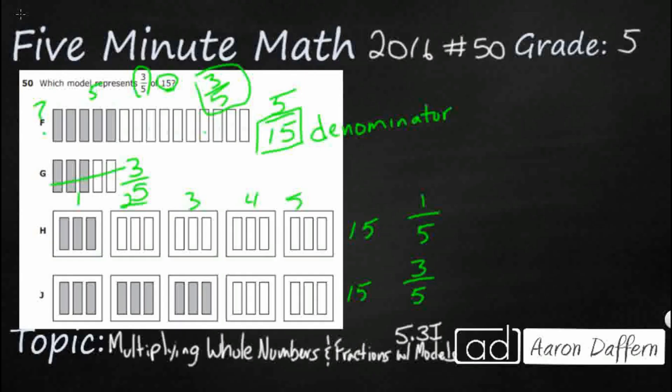So J has got 15 total, and it's got them in five groups. And our numerator here, remember our numerator is our top number, shows that out of those five groups, three of them are chosen. Now what it doesn't tell us is how many are in each group. We can visually see that there are three bars in each group.